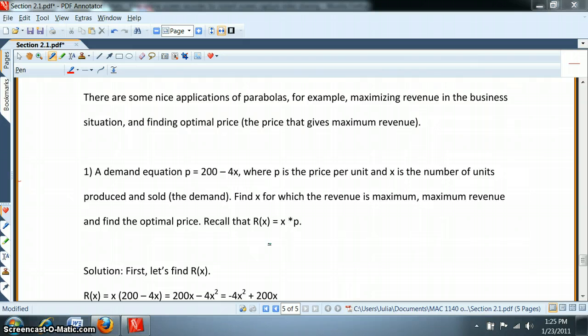In our problem, the revenue is very simple to get. It's actually X, the number of items or number of hours, times the price per product or per hour. That way we get the total revenue.